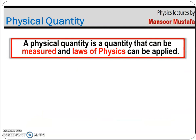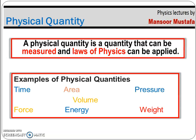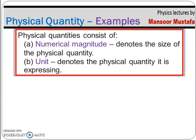A quantity that can be measured and on which the laws of physics are applied — all such quantities are called physical quantities. Examples of physical quantities include time, area, pressure, volume, force, energy, and weight, among many others. Now, when we talk about measuring any physical quantity, it consists of two essential things without which a physical quantity cannot be completely represented.